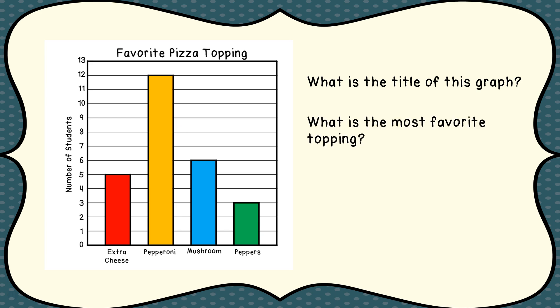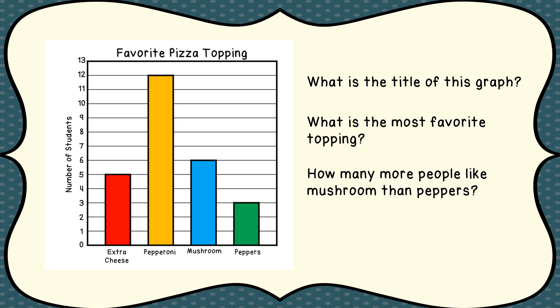Second question: what is the most favorite topping? Based on this graph, which topping do students like the most? Third: how many more people like mushrooms than like peppers? Find the bar for mushrooms and how much that's worth, find the bar for peppers and how much that one's worth, then go ahead and do the math. And then — this is a tough one — how many students voted in this survey? Pause and figure out the answer and jot that down.